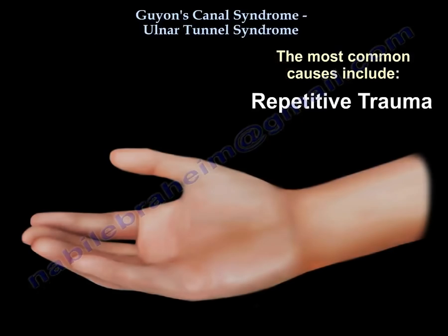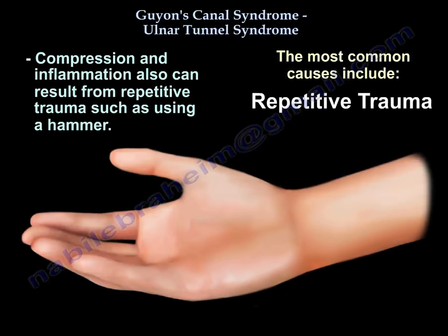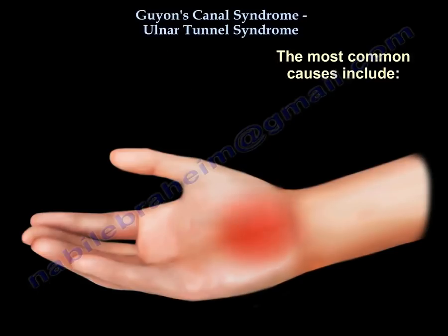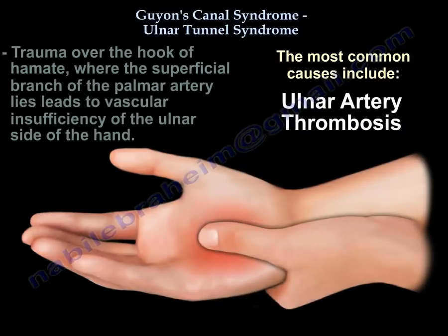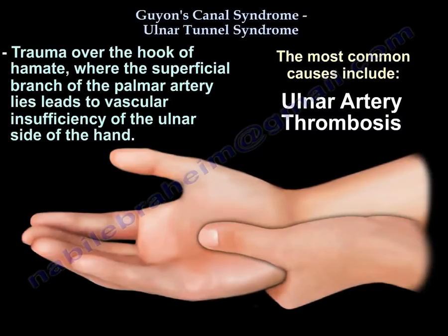Repetitive trauma — compression and inflammation can also result from repetitive trauma such as using a hammer. Ulnar artery thrombosis: trauma over the hook of the hamate where the superficial branch of the palmar artery leads to vascular insufficiency of the ulnar side of the hand.